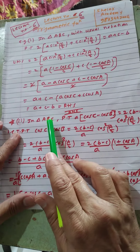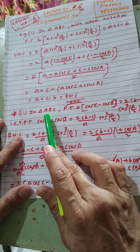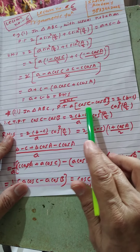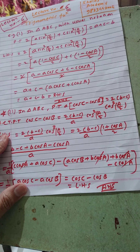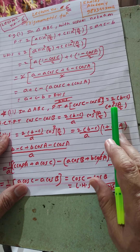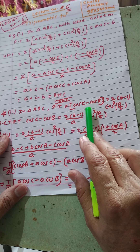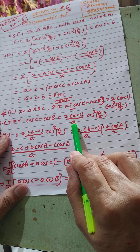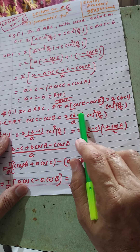This type of problem is worth 2 marks. The second example is very important, interesting, and difficult. In triangle ABC, prove that a(cos C − cos B) = 2(b − c)cos²(A/2). Whenever we have a length and angle combination, adjust the terms to simplify many terms into a single term. We start from RHS.